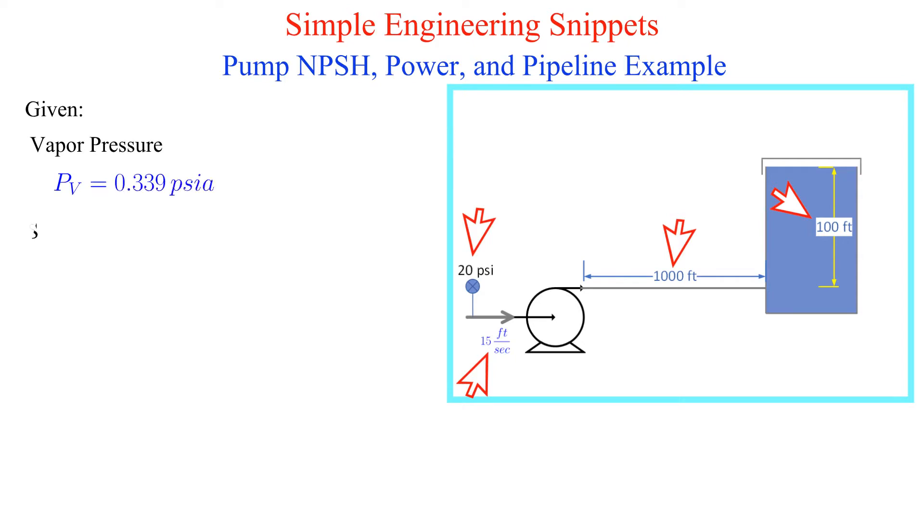Also provided is the vapor pressure, specific weight of the fluid, the friction factor, and the sum of the minor losses for the 1,000 foot pipe.